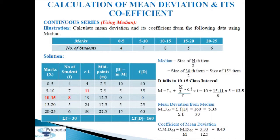Calculation of mean deviation and its coefficient in continuous series using median. Given data: marks and number of students. We make a table of six columns. First column: marks (x). Second column: frequency f. Third column: cumulative frequency — 4, 4+7=11, 11+8=19, 19+5=24, 24+6=30.